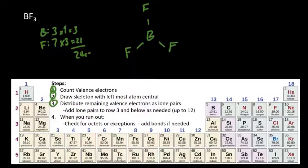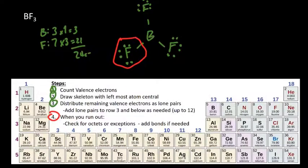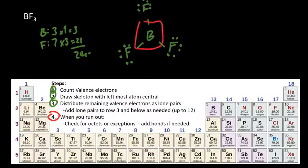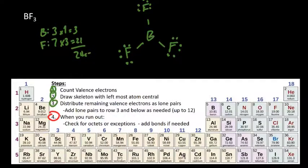Now I distribute the remaining electrons. There are 6 electrons in those 3 bonds. I fill lone pairs on each fluorine until each has an octet, using all 24 electrons. Let's check octets: each fluorine has 8 total electrons — fluorine is happy, and all those fluorines are the same. Boron has only 6 electrons. If boron were a normal atom, this is where we'd add a double bond. But boron is actually happy without an octet — it wants 6. So this is the correct molecule.